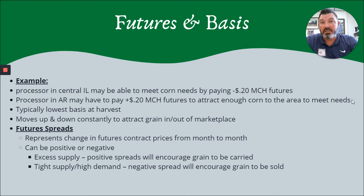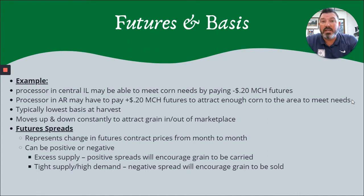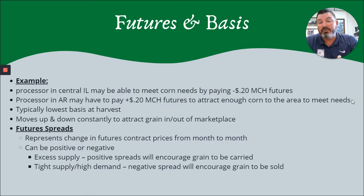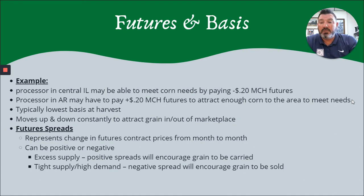If the basis strengthens — meaning it's getting wider or farther away from the futures price — for example going from $0.15 under the board to $0.40 under the board, your local elevators are telling you it would be a smart idea to store grain, because they'll take it but they're going to buy it at a discount, and the market doesn't need grain either. If you see the basis weaken — moving closer to futures or even inverted above the futures price — then your local elevators and the grain market are trying to attract grain away from the farm and into the pipeline. Those things can be positive or negative in relationship to the supply of grain and the need for grain movement.